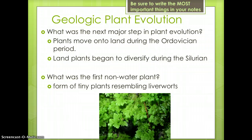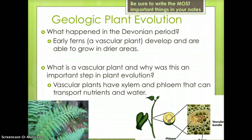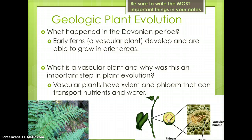The image on the bottom is a modern day liverwort. During the Devonian Period, early ferns, which are vascular plants, developed and could grow in drier areas. Vascular plants have xylem and phloem that transport nutrients and water. These plants helped to create soil. The image on the left shows a modern day fern, and the image on the right shows a plant's xylem and phloem.